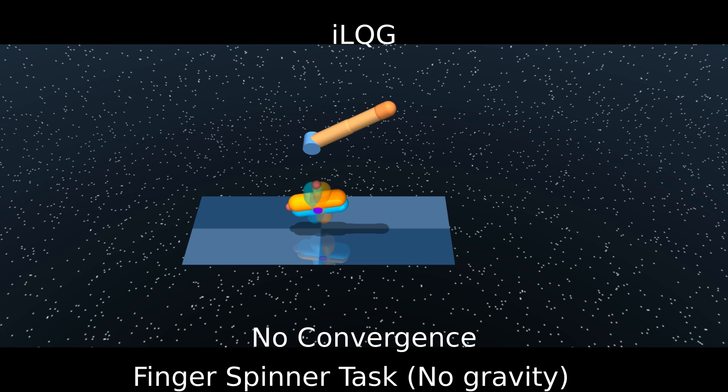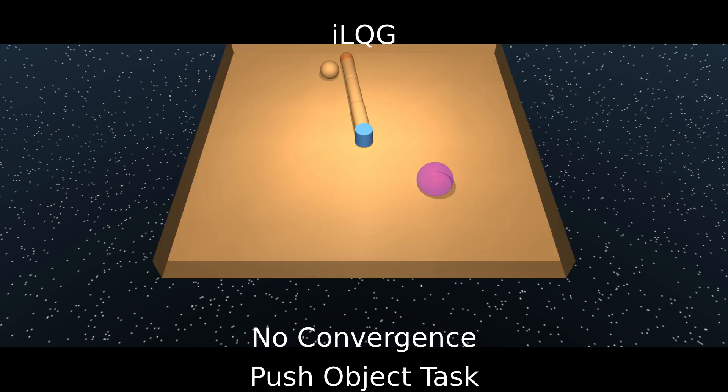The following demo shows an example of this where second-order algorithm known as ILQG, Iterative Linear Quadratic Gaussian controller, fails to converge and reverts to a local minimum, staying in the same place.